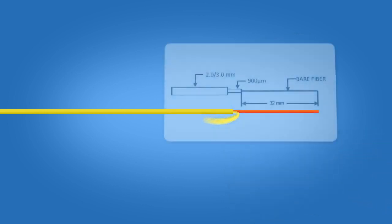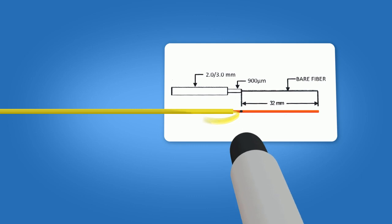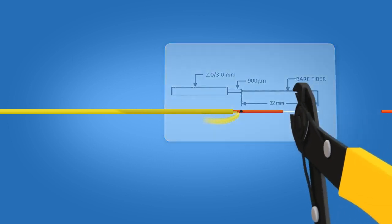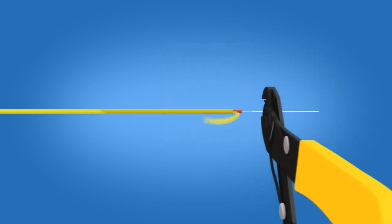Using the template on the front of the connector packaging, mark the fiber at 32 millimeters from the end of the 900 micron fiber. Strip 32 millimeters of 900 micron and 250 micron coating off, exposing the bare fiber. Clean the fiber with a lint-free wipe and fiber preparation fluid.